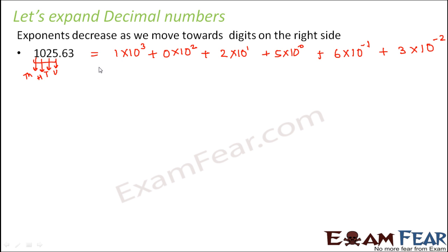Now if you want, you can verify that this value comes out to be the same. For example, this would be 1000 + 100 + 20 + 5. So this will give you 1025.